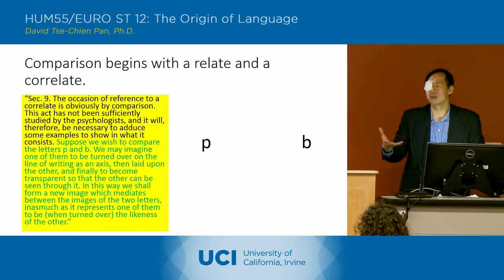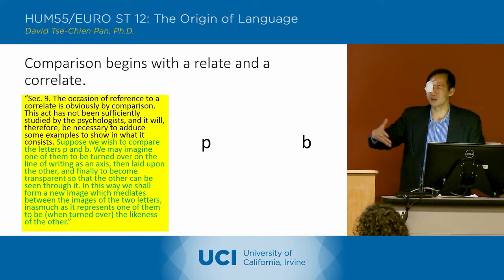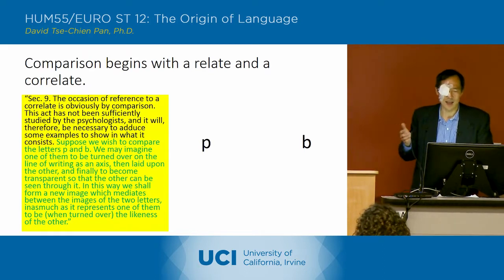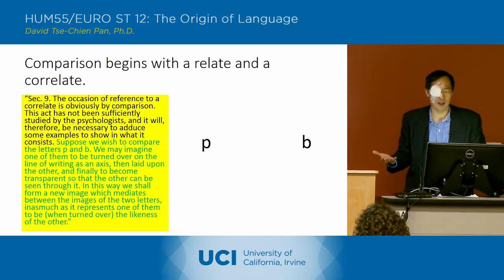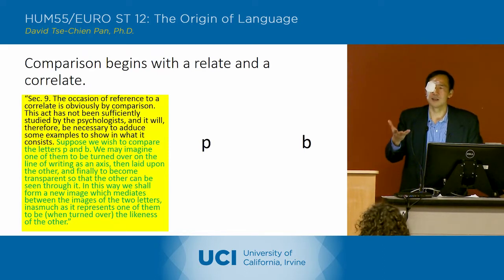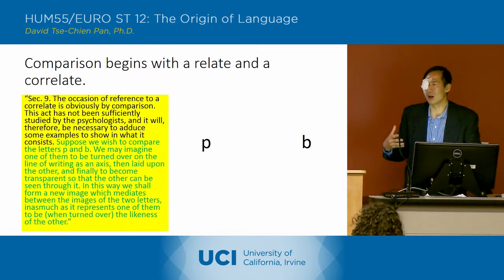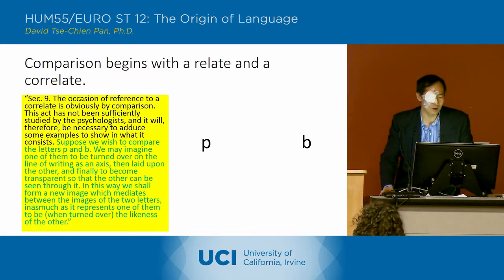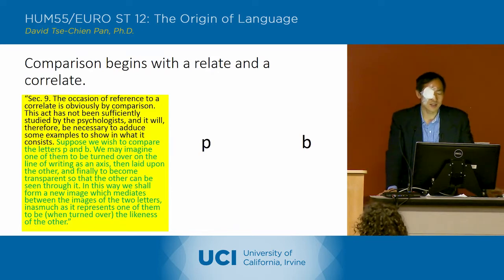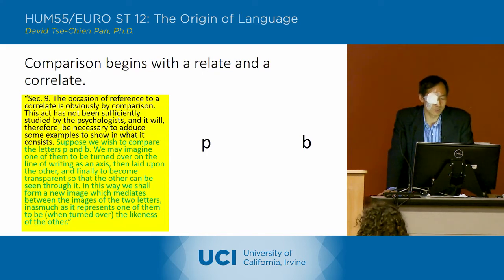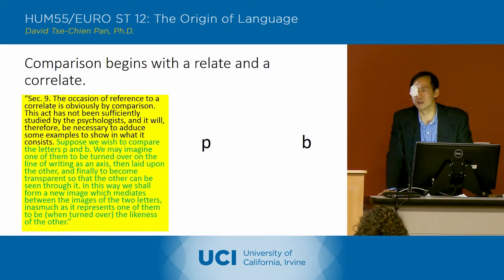This process of looking at blackness and thinking there must be whiteness contrasting it — that's a comparison. He says that relationship of comparison is actually a very complicated one. He writes: 'The occasion of reference to a correlate is obviously by comparison. This act has not been sufficiently studied by the psychologists, and it will therefore be necessary to adduce some examples to show in what it consists.'